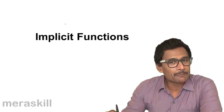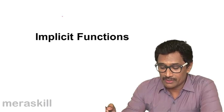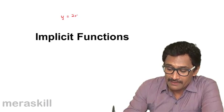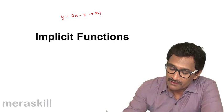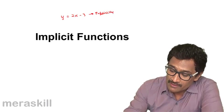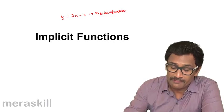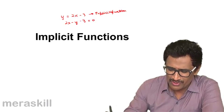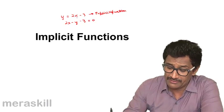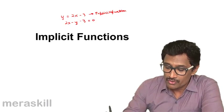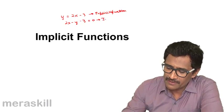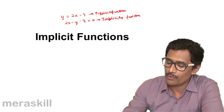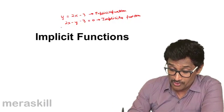We have implicit functions. For example, y = 2x - 3 is called an explicit function — explicit means it's very clearly mentioned that y is a function of x. The same thing can be written as 2x - y - 3 = 0, or x as (y-3)/2. This kind of expression is called an implicit function, where the right-hand side will not have y alone, or you collect all terms together.